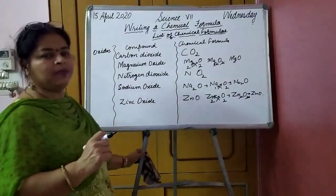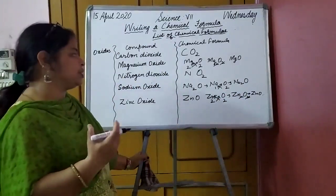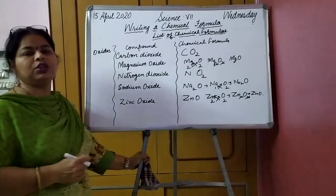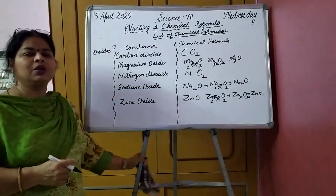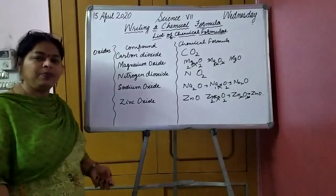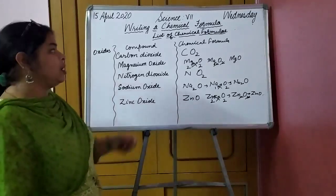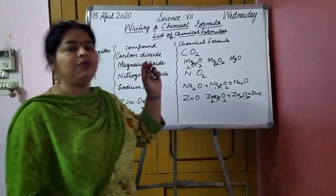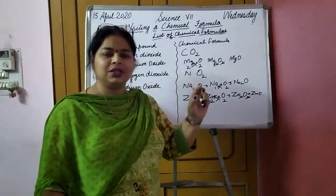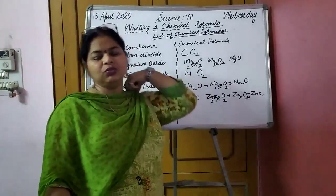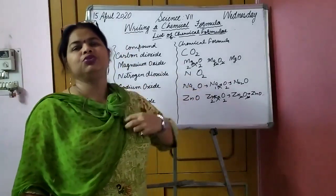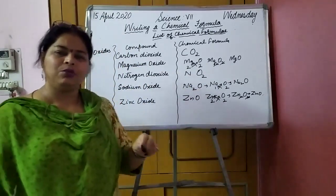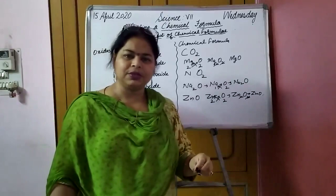Some more examples we will discuss tomorrow. So for today, what you need to learn is: what do you mean by chemical formula, and how a chemical formula is written. Write down the steps to write a chemical formula and give some examples.